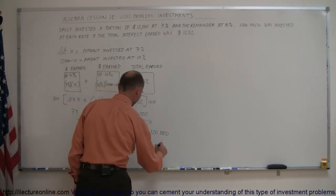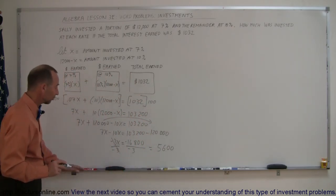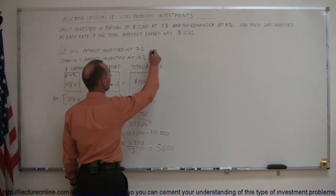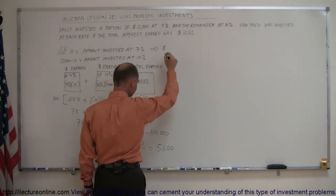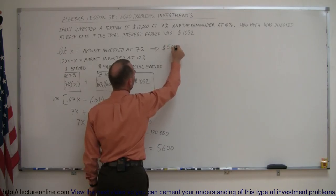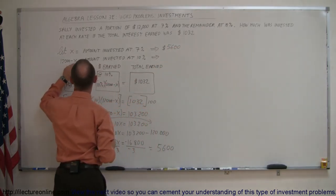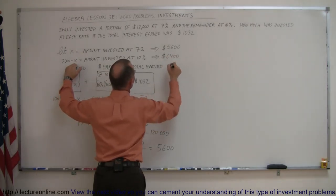And so x was defined as the amount invested at 7%, which means that Sally invested $5,600 at 7%, and the remainder, $12,000 minus that, which would be $6,400 at 10%.